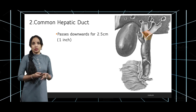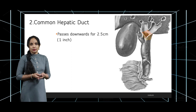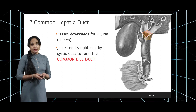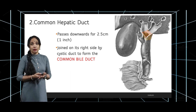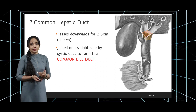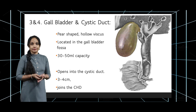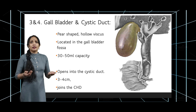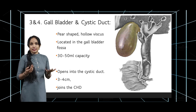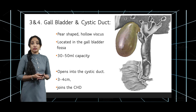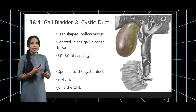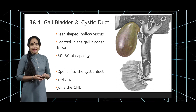The common hepatic duct is around one inch — 2.5 centimeters — in length, and it is joined on its right side by the cystic duct, after which it changes its name and is now called the common bile duct. The gallbladder is a pear-shaped viscus or sac located in the gallbladder fossa. We will be seeing the gallbladder and the cystic duct in more detail in a later video.